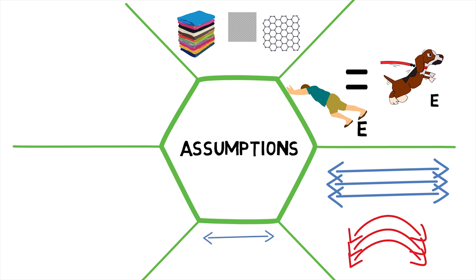Fourth, the beam is initially straight and all longitudinal filaments bend into circular arcs with a common center of curvature.